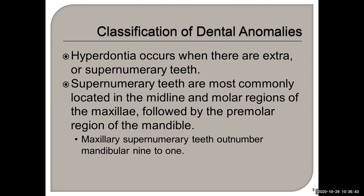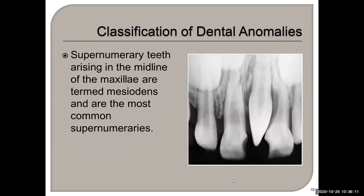Hyperdontia occurs when there are extra or supernumerary teeth. Supernumerary teeth are most commonly located at the midline and the molar regions. Maxillary supernumerary teeth outnumber mandibular nine to one — so it's more common to have extra supernumerary teeth on the maxilla than on the mandible.